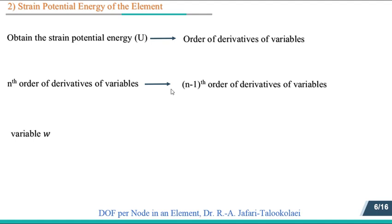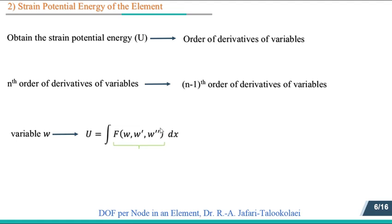For instance, consider we have only one variable w — for example, the deflection of a beam element. If w double prime, meaning the second order derivative of w, appears in the integrand of the strain potential energy, then we must consider w and w prime as the degrees of freedom for each node — that is, up to the first order derivative of w.